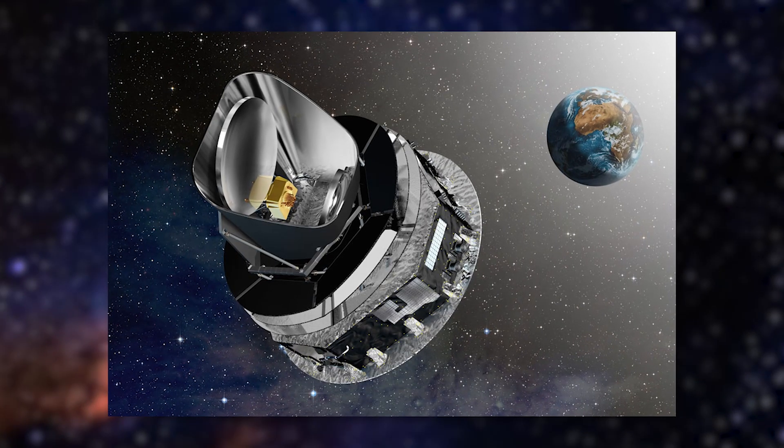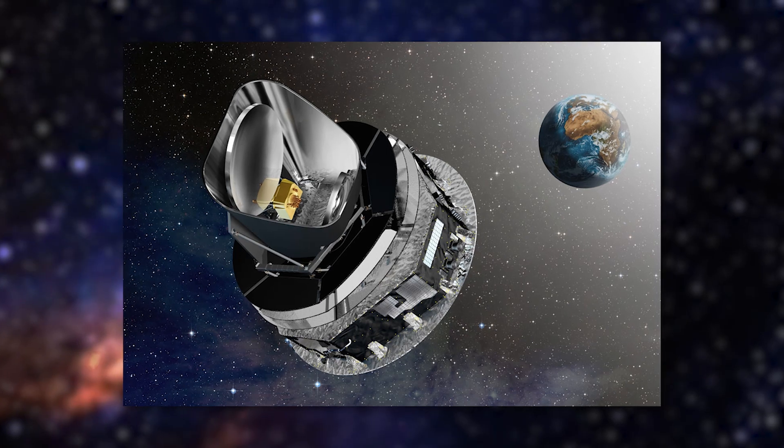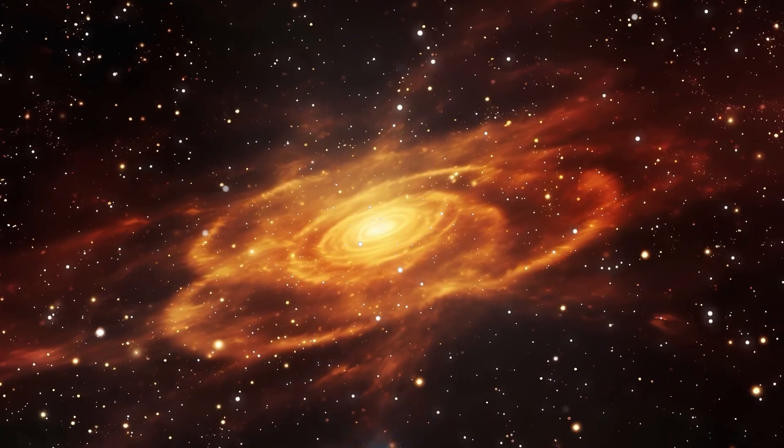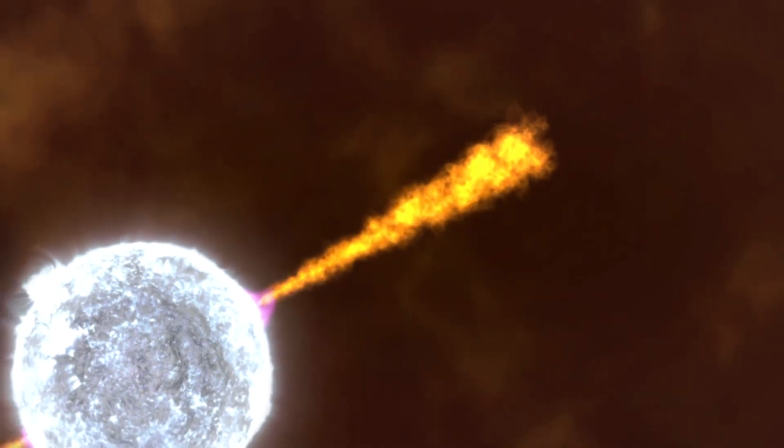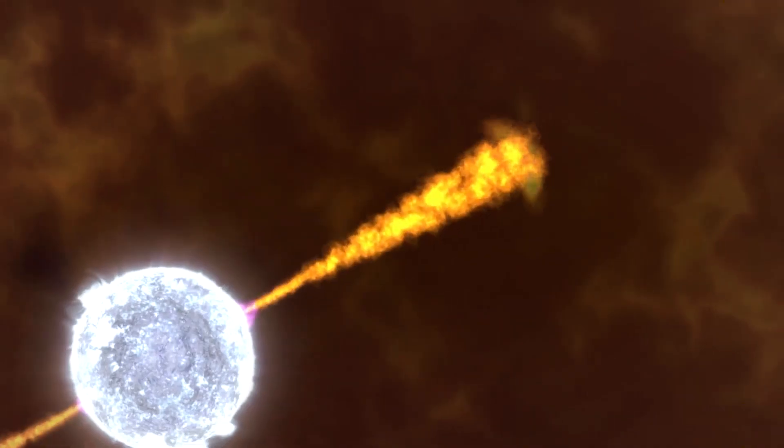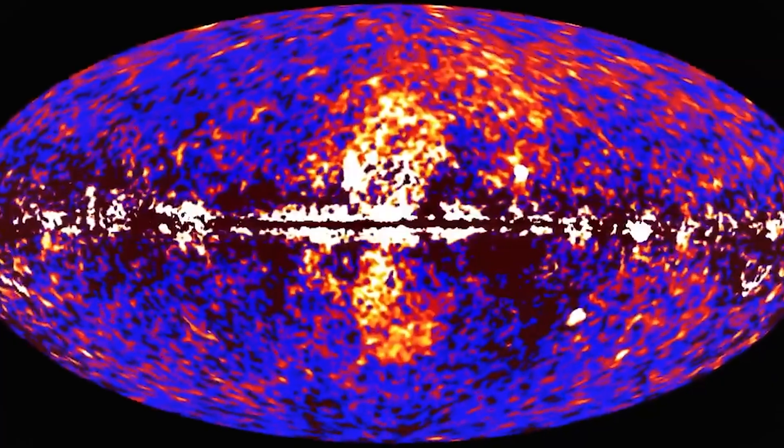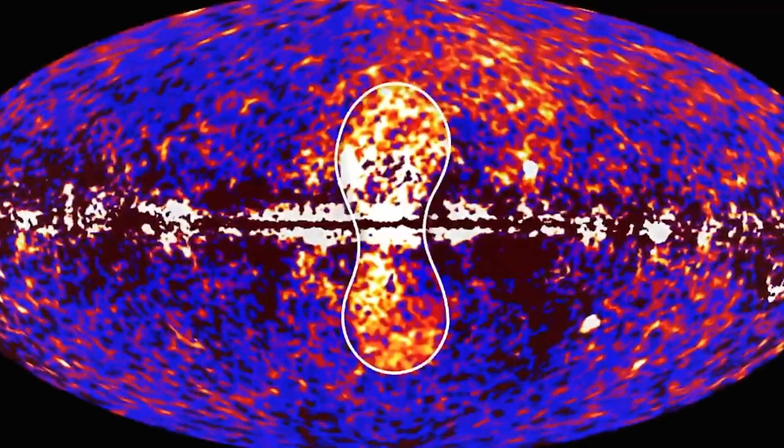The Planck satellite and other missions studying the cosmic microwave background have shown that these flows create a subtle but measurable effect on the ancient light from the Big Bang. The fact that we can detect our motion through this cosmic web by studying 13.8 billion year old light shows just how interconnected everything in the universe really is.